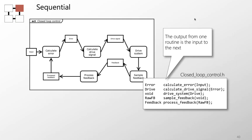Sequential cohesion is commonly confused with procedural cohesion. The key difference: in sequential cohesion, the output from one function is the input to the next. In a closed-loop controller, the calculated error is passed to the next function; the drive signal output is passed to the next element in the chain. It is therefore reasonable to put these in the same module, though we get the same problems as with procedural cohesion.